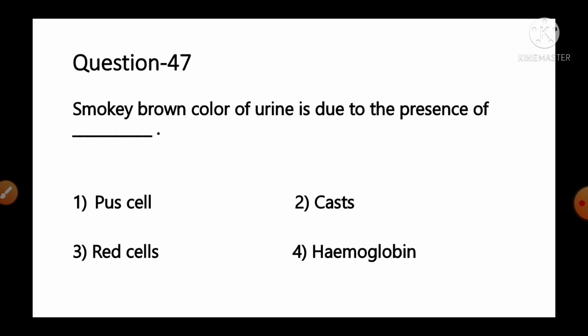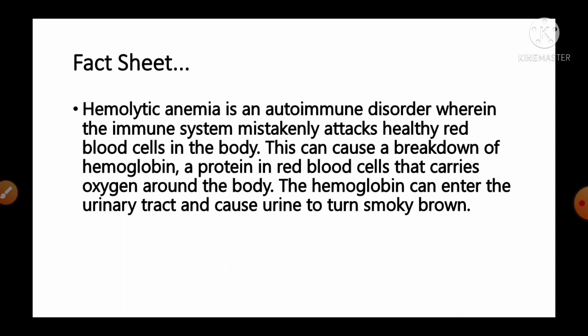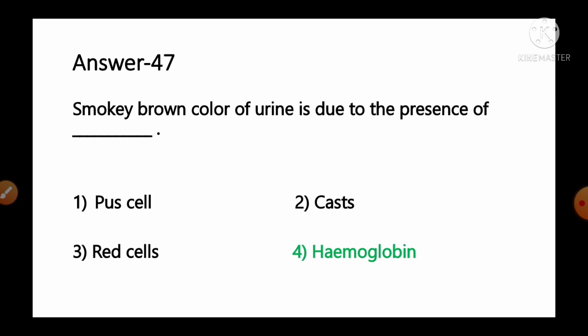Question number 47: Smoky brown color of urine is due to the presence of — options: 1) pus cells, 2) casts, 3) red cells, 4) hemoglobin. In hemolytic anemia, breakdown of hemoglobin — the protein in red blood cells that carries oxygen — causes hemoglobin to enter the urinary tract, turning the urine smoky brown. So option number 4, hemoglobin, is the correct answer.